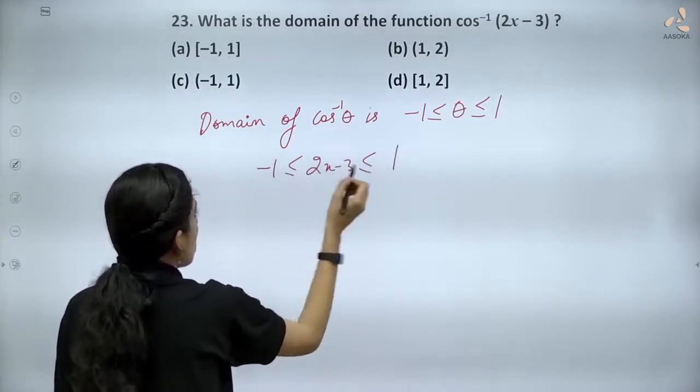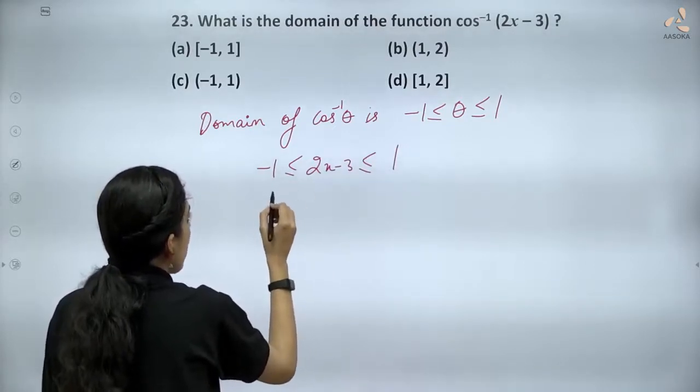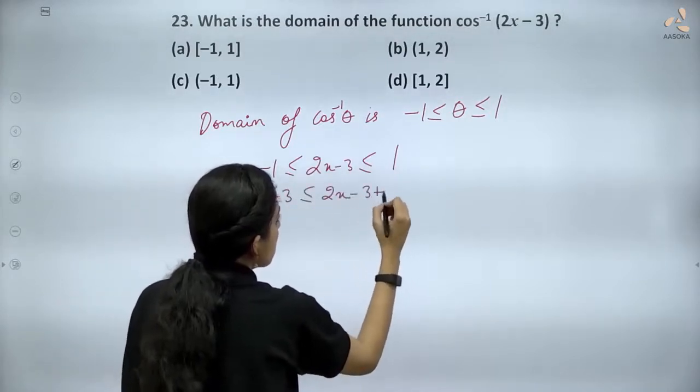Adding 3 to all sides, we get minus 1 plus 3, that is 2, less than equal to 2x, less than equal to 1 plus 3.